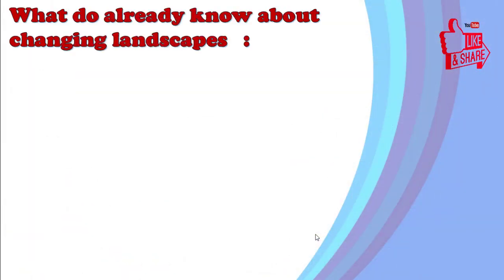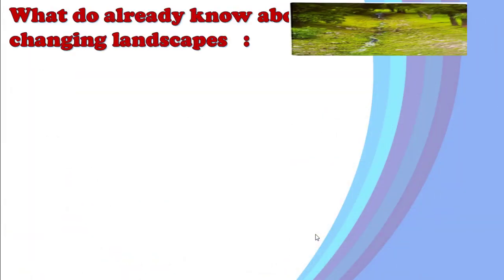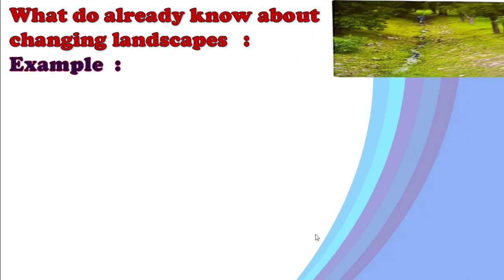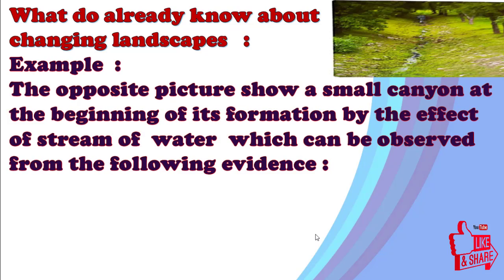What do we already know about changing landscapes? This picture shows a small canyon at the beginning of its formation by the effect of a stream of water, which can be observed from the following evidence. When water moves from a high place to a low place, it moves sediments in front of it, forming a canyon or small canyon.